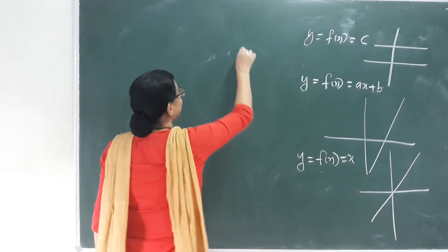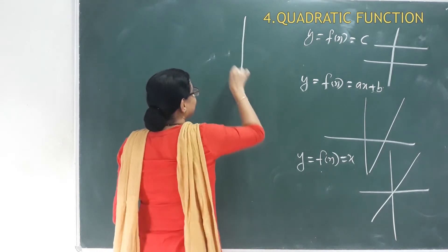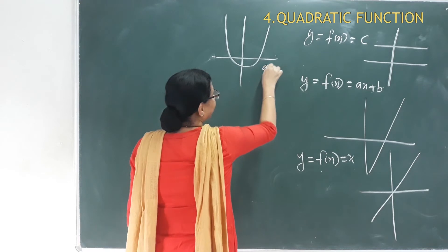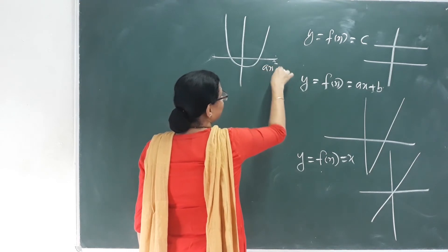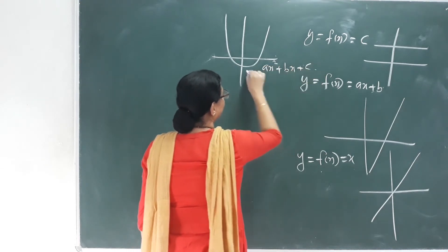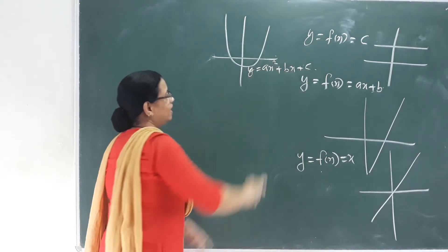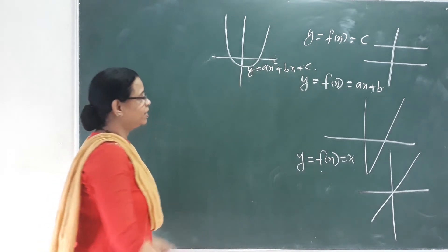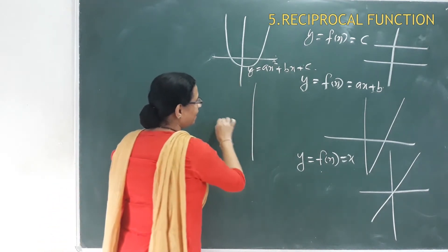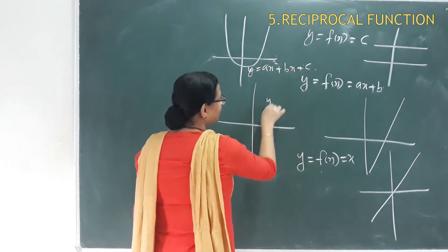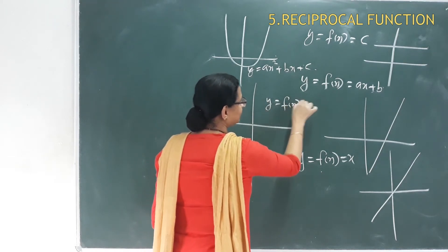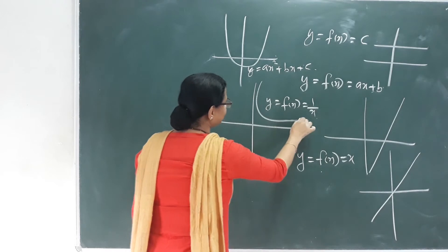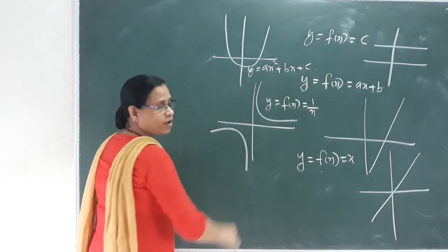The next is the quadratic function. The equation is ax² + bx + c, and its graph is a parabola. After that, the reciprocal function: y = f(x) = 1/x. This is the reciprocal function graph.